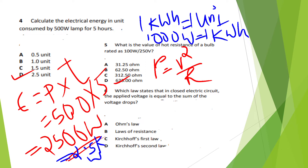Question 6: Which law states that in a closed electric circuit, the applied voltage is equal to the sum of the voltage drops? The answer is Option D — Kirchhoff's Second Law.